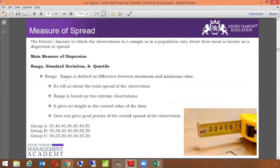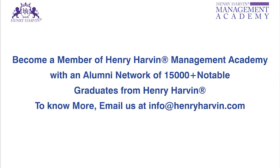Now we're going to talk about measure of spread. Spread is the amount to which the observations in a sample or population vary about their mean, known as dispersion or spread - how far the data values are from the mean. The main measures of dispersion are range, standard deviation, and percentile. What is range? Range is defined as the difference between maximum and minimum value. It tells us about the total spread of observations. Range is based on only two extreme observations - the minimum and maximum values. It gives no weight to the central values. It does not give a good picture of the overall spread of observations, meaning range only focuses on the first and last parts.